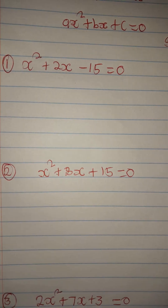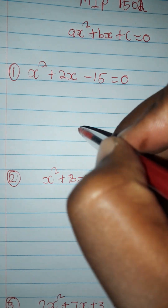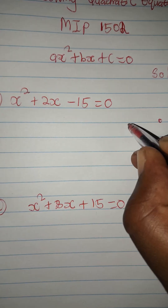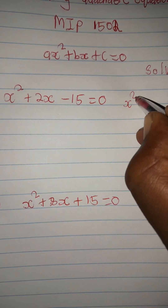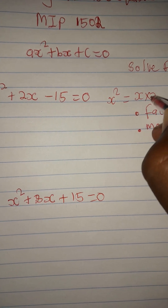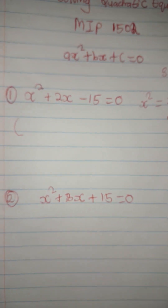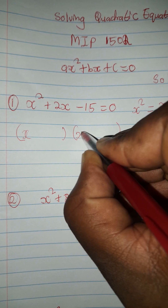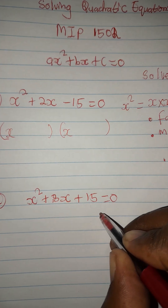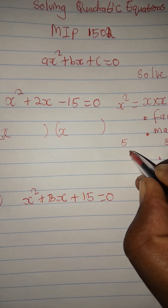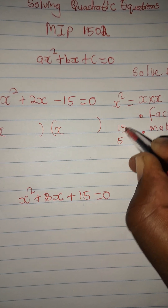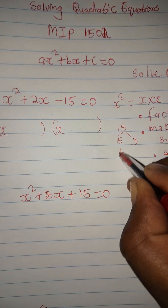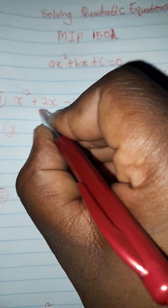Let's start with the trinomial. We are given a trinomial and they want you to solve this quadratic equation. First, let's find the factors of x squared: that's x multiplied by x. So we are going to have two brackets with x and x. Why are the factors that make up 15? We can think of 5 times 3.